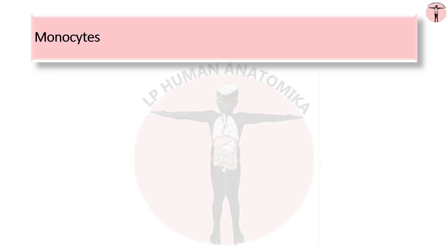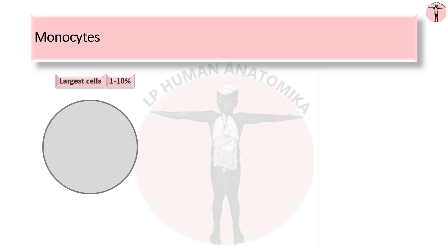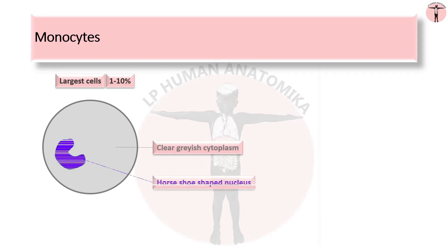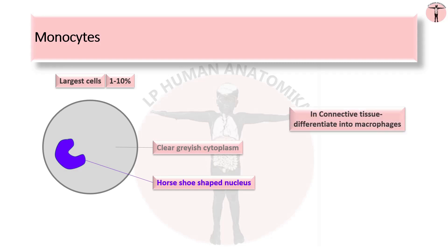Monocytes are the largest leukocytes, constituting 1 to 10% of total leukocytes in blood. Monocytes are large phagocytic white blood cells with clear grayish cytoplasm and an eccentrically placed, shoe-shaped nucleus. In the connective tissue, they differentiate into macrophages. The function of monocytes is phagocytosis. With this, we have completed the first part of the components of connective tissue — the cells.